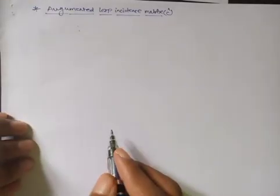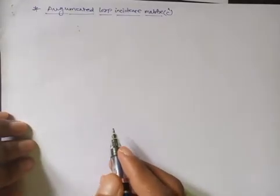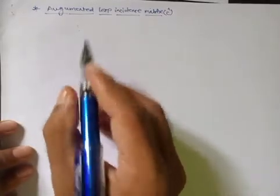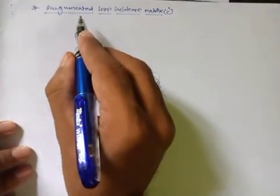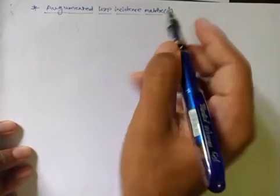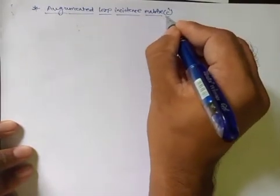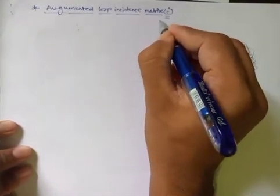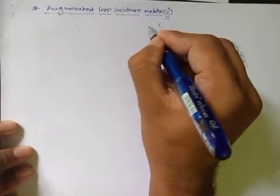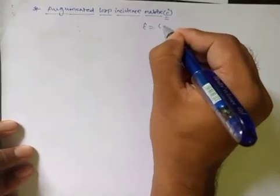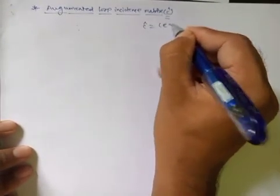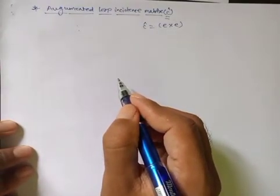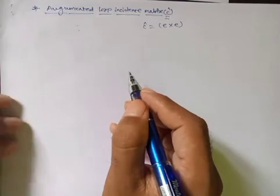Welcome, dear students, to the 12th lecture of graph theory under the heading CMPSA. Today we will discuss the augmented loop incidence matrix, which is denoted by C-cap matrix. The dimension for this matrix is E cross E, that is number of elements versus number of elements.